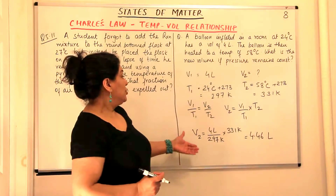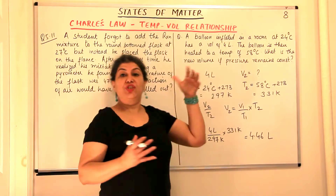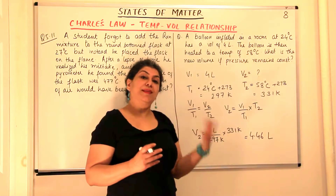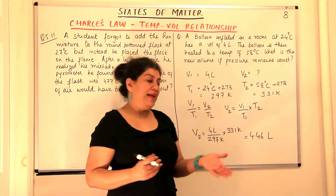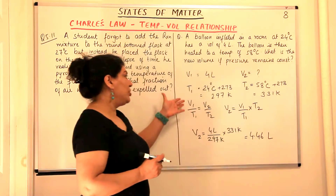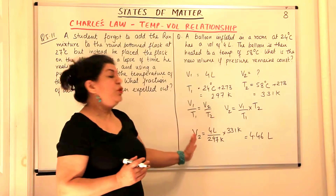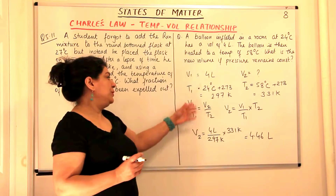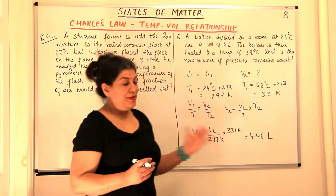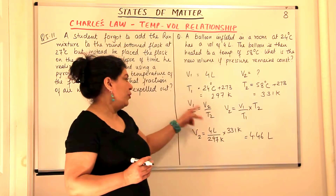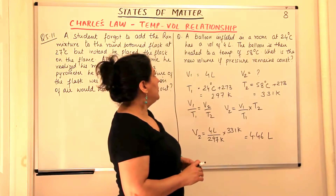So what did we do? Whenever you get a problem of Charles Law and the temperature is in Celsius, you first convert the temperature to the Kelvin scale and then use the relation V1 upon T1 is equal to V2 upon T2 to find that one quantity which is missing among the four that we are looking for.